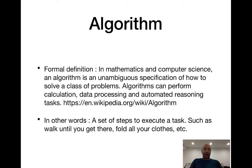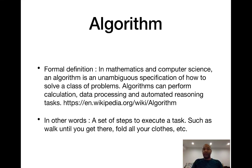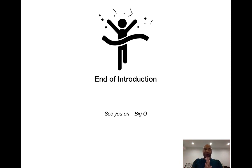As for an algorithm, the formal definition is available on Wikipedia, but in my own words: an algorithm is a set of steps to execute a task. For example, walking until you reach the supermarket — you're doing that task until you reach your destination. Or calculating all the employees' salaries, and so on. That's basically it. That's the end of my introduction — I'll see you guys next in the Big O Notation.